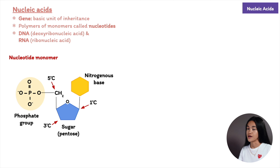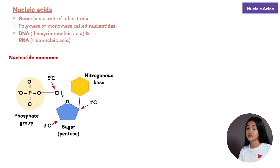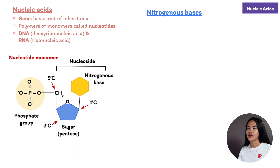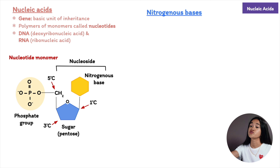Polymers of nucleic acids are called polynucleotides. A nucleotide consists of a five-carbon sugar (a pentose), a nitrogen-containing nitrogenous base, and one, two, or three phosphate groups. Two phosphate groups are lost during the polymerization process. The region of a nucleotide without any phosphate groups is called a nucleoside.